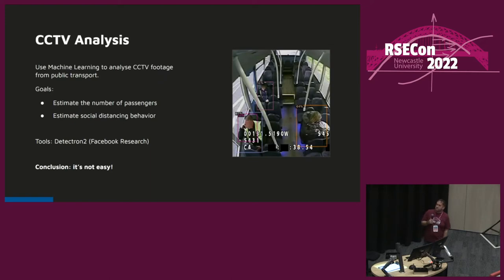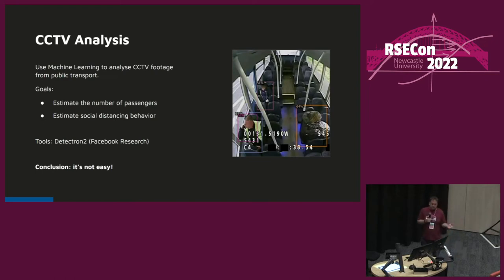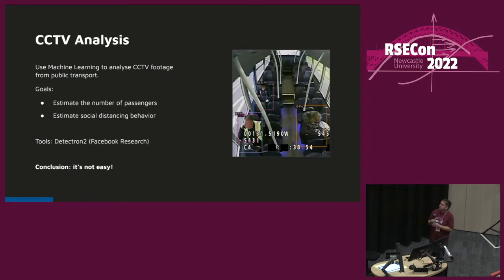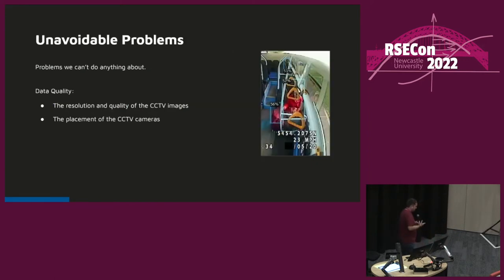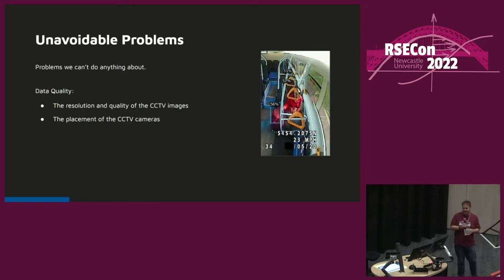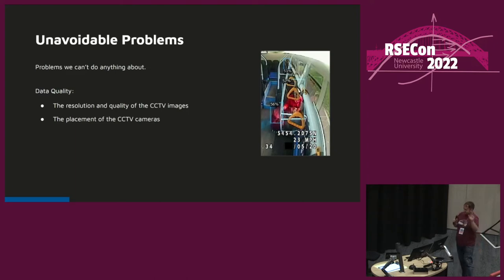Some colleagues were analyzing existing CCTV footage captured on vehicles to do two main things: estimate vehicle utilization — how many passengers were in the image — and estimate whether passengers were observing social distancing. They used Detectron2 by Facebook Research. The conclusion was that it's not easy, partly because we can't control CCTV data quality and cameras are often placed in poor positions, making it hard to identify passengers among handrails and other obstructions.